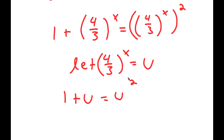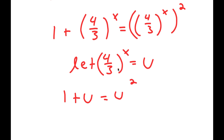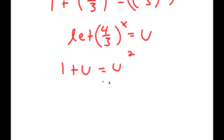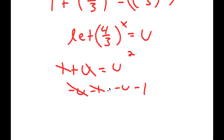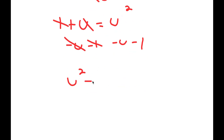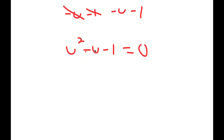Now if I subtract u and 1 from both sides, those terms cancel out, and I get u squared minus u minus 1 is equal to 0.